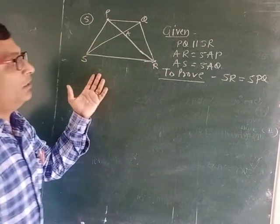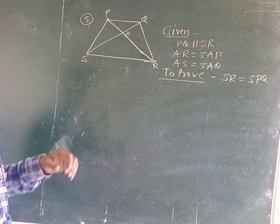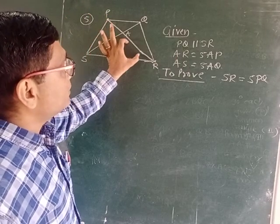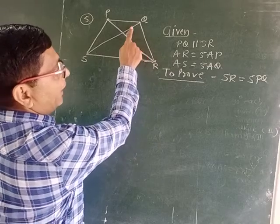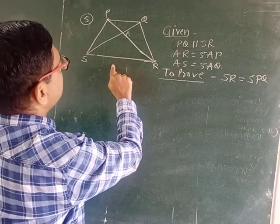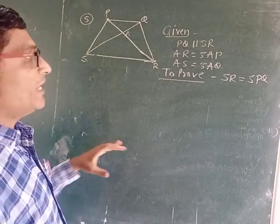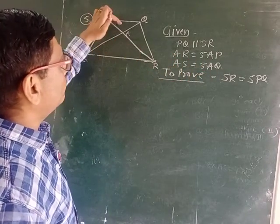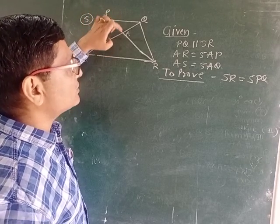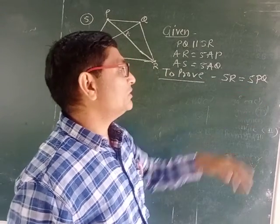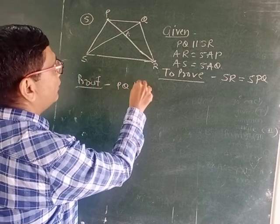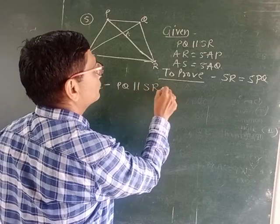Now look at this figure. In the fifth example, there is a trapezium, and in this trapezium PQ is parallel to SR — this is given. Also given: AR = 5AP and AS = 5AQ. We have to prove that SR = 5PQ.